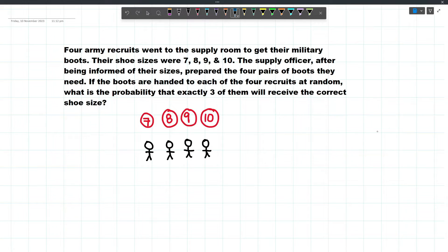The supply officer, after being informed of their sizes, prepared the 4 pairs of boots they need. If the boots are handed to each of the 4 recruits at random, what is the probability that exactly 3 of them will receive the correct shoe size?